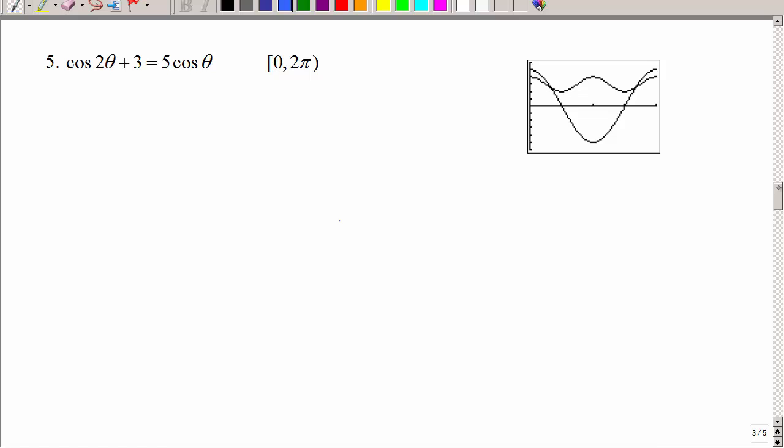Number 5. I see that we have the same trig function, but not the same angle, so I need to look at those double angle identities and see if I can have a relationship between cosine 2 theta and cosine. Cosine 2 theta, we have lots of choices as we saw before, but this time I'm going to choose that one because it relates cosine to cosine and it doesn't involve sine at all.